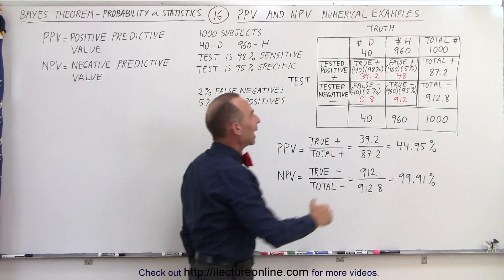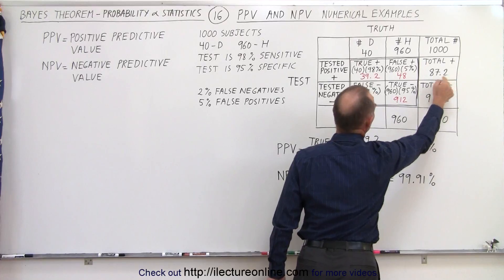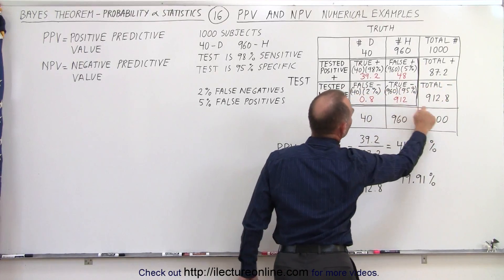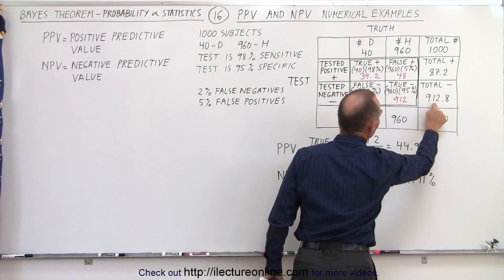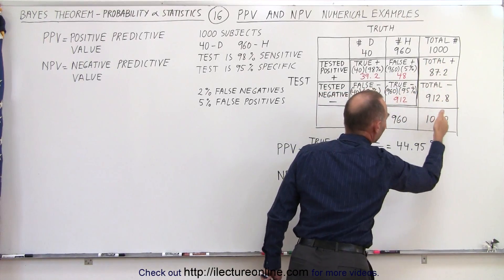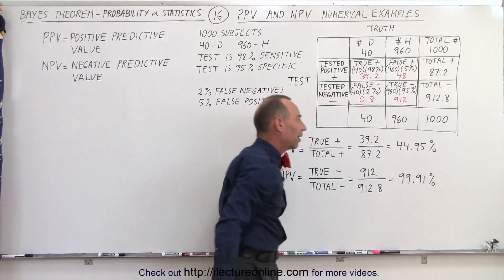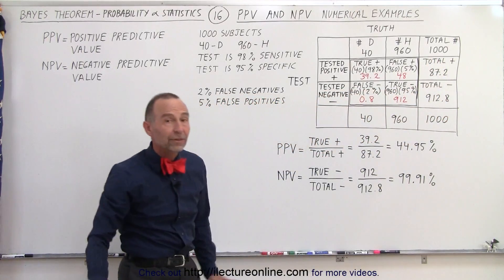Adding up all the positives gives 87.2, and all the negatives gives 912.8, totaling a thousand subjects.